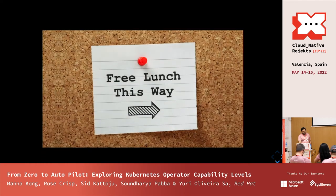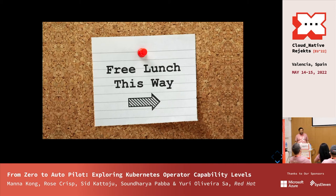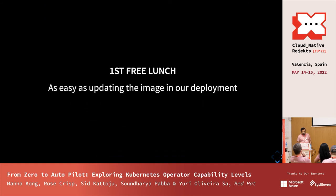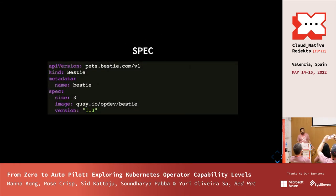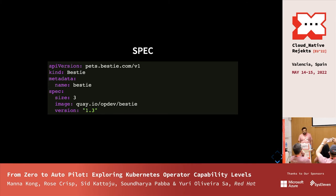We have a theme for Level 2 and Level 3 capabilities — it's basically a free lunch. Economists say there's no such thing as a free lunch, but in Kubernetes you get a lot of stuff for free. Our application uses a deployment to run the workload, and to roll out minor updates we just update the deployment. Through the custom resource interface, exposing parameters like deployment size, version, and image, you basically get Level 2 capability for free.